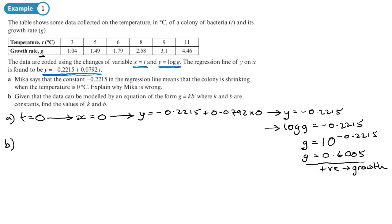Part b. Now we're going to change the equation that we've got into that model. So first of all, taking the equation that we've given, y, we can put log g there where y is. So that's minus 0.2215 plus 0.0792, and we can replace x with t. Because that's what we've been given.